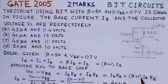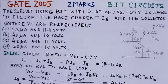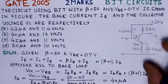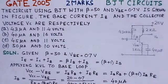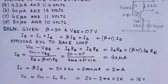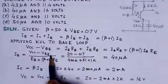Since IE equals (beta plus 1) IB, we can substitute. Rewriting this equation, we get IB equals (VCC minus VBE) over (RB plus (beta plus 1) RE).